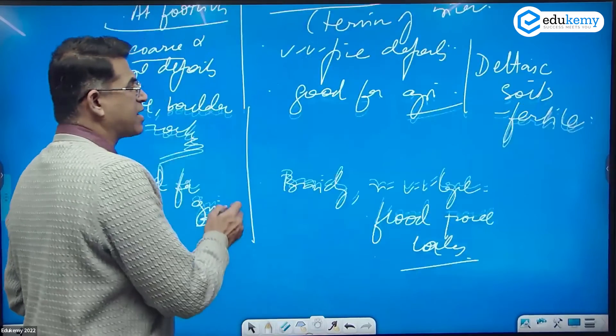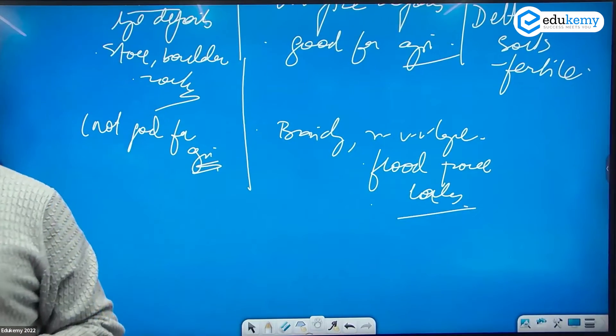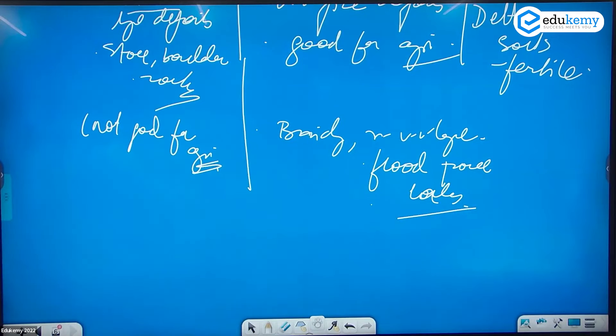In deltas, braiding occurs. The rivers are very large and flood prone with lots of floods. There are lakes, examples being Koleru Lake and the bheels of Pingol. These are lake regions.